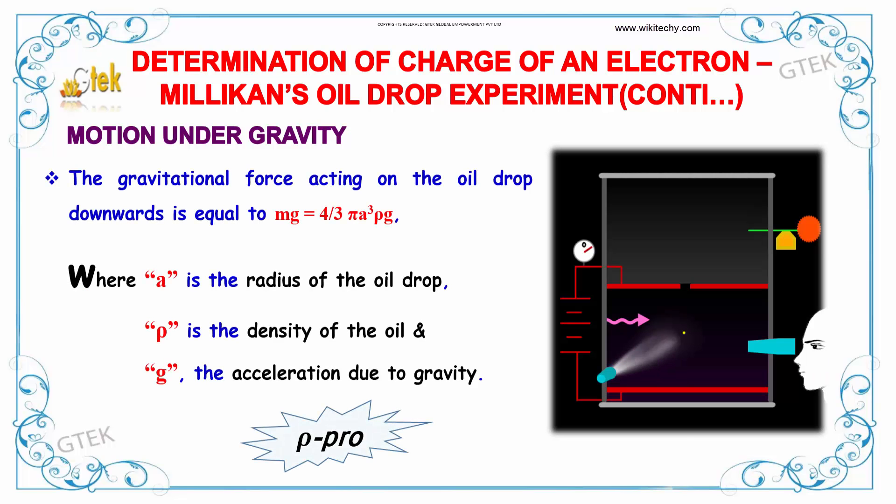Now this is your Millikan's oil drop experiment. If we talk about motion under gravity, the gravitational force acting on the oil drop downwards is equal to 4 by 3 pi a cubed rho into g, where a is the radius of the oil drop, rho is the density of the oil, and g is the acceleration due to gravity.